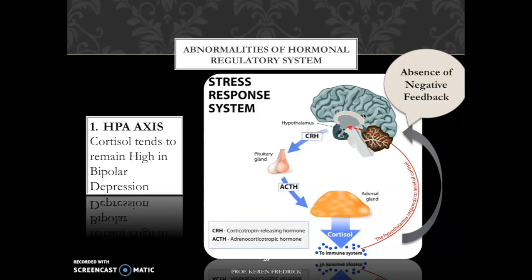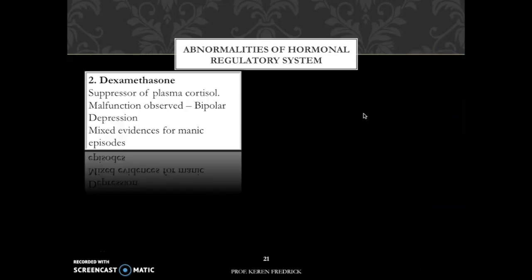The next thing is dexamethasone, which we have already discussed in the context of unipolar disorders. Dexamethasone is a powerful suppressor of plasma cortisol in normal individuals. However, it fails entirely to suppress cortisol, or fails to sustain its suppression, in depressed individuals. Such abnormalities are also observed in bipolar depression, though the evidence for manic episodes is mixed and requires further investigation.